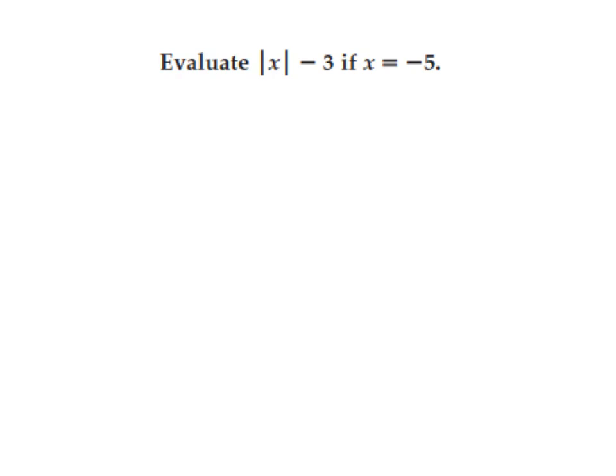Our next problem says evaluate the absolute value of the quantity x minus 3, given that x equals negative 5. We substitute to get the absolute value of negative 5 minus 3. Treat the absolute value bars like parentheses — do everything inside first. The absolute value of negative 5 is 5, since distance is always positive, so the bars disappear. The subtraction sign on the outside stays, and 3 has no absolute value bars so it remains 3. Now we have 5 minus 3, which equals 2.